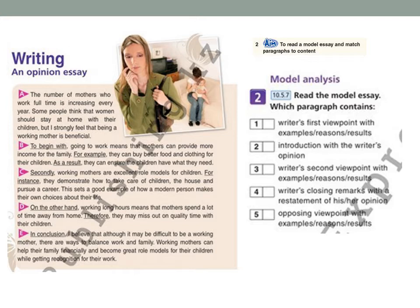First of all, read the model essay, then do exercise number two and check yourself. The answers are: number one — B, number two — A, number three — C, number four — E, number five — D. Have you got any mistakes?